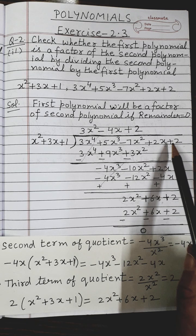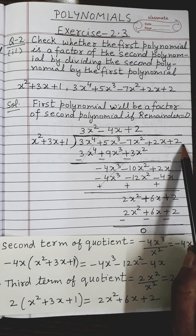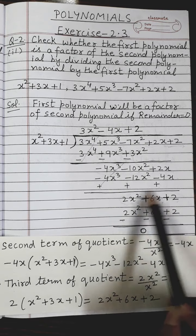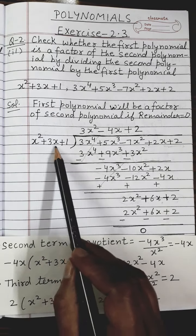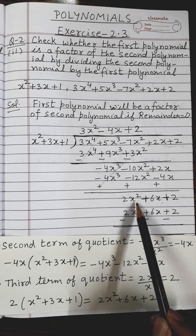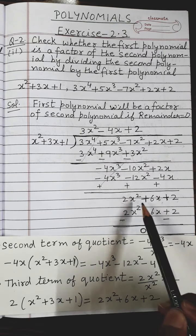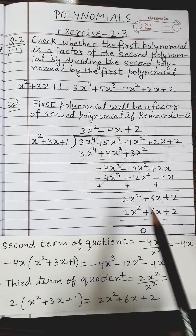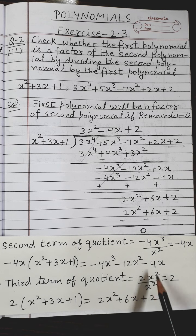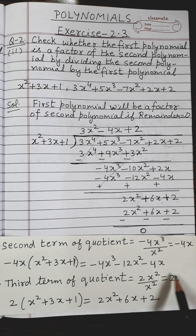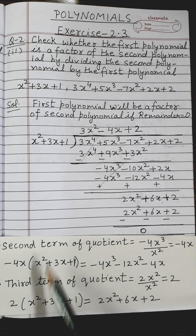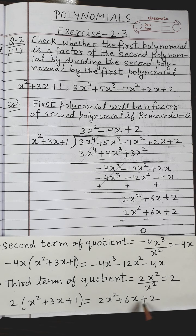There is a +2 term remaining in the dividend, so I copy it down. This becomes the next new dividend: 2x² + 6x + 2, with the same divisor x² + 3x + 1. The third term of the quotient equals 2x² ÷ x² = 2. I write +2 on the quotient side. Now I multiply 2 by the divisor: 2 × (x² + 3x + 1) = 2x² + 6x + 2, and write it below.